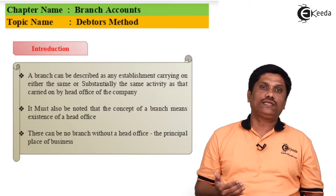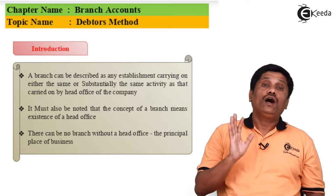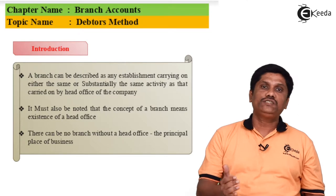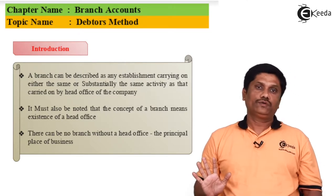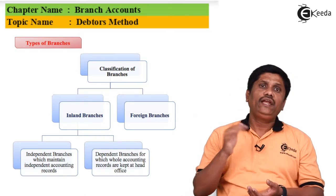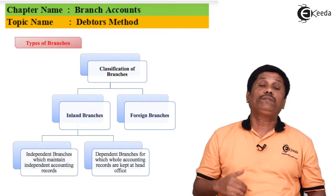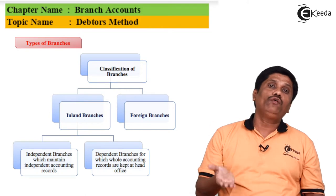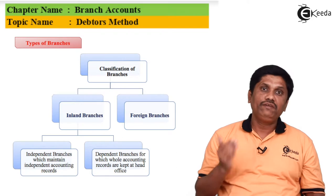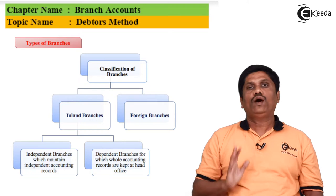So this is what the branch is all about. An independent branch, on the other hand, doesn't mean it is independent in all ways. An independent branch is one where the head office has given permission to do its own accounting as if it is a separate organization or separate entity. They will do their accounting on their own; the head office will interfere only minimally wherever required.